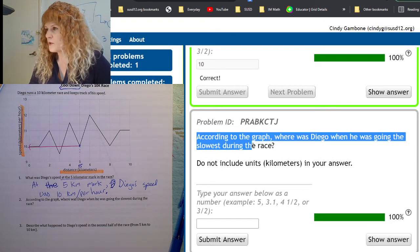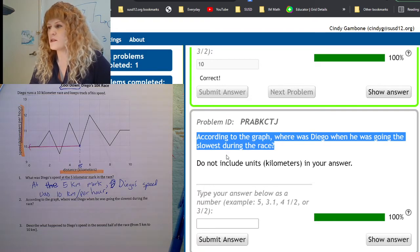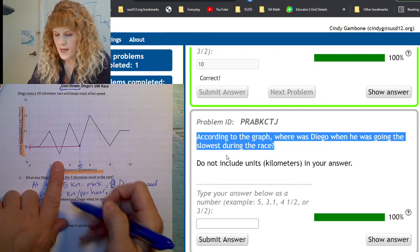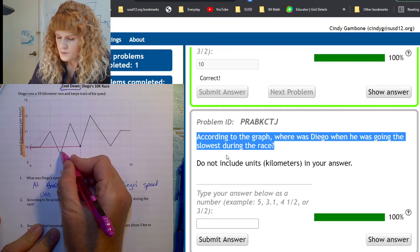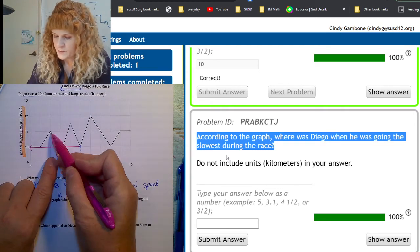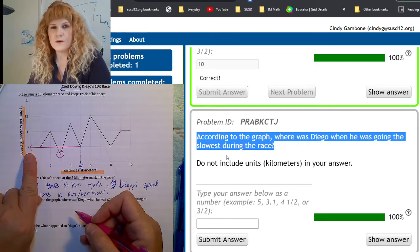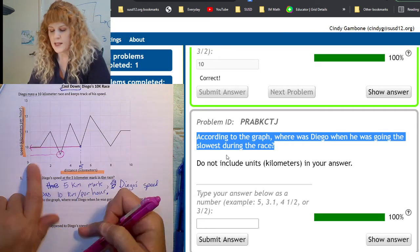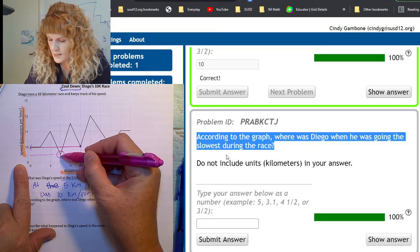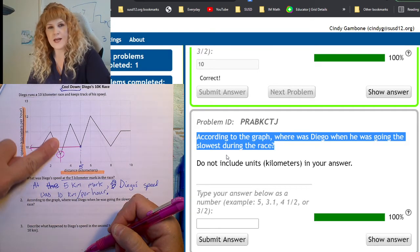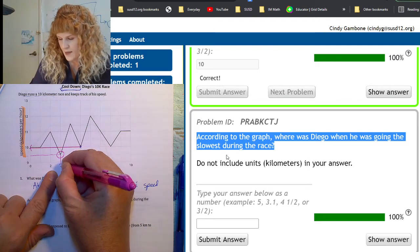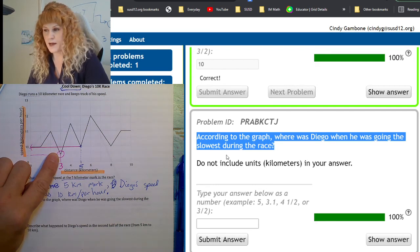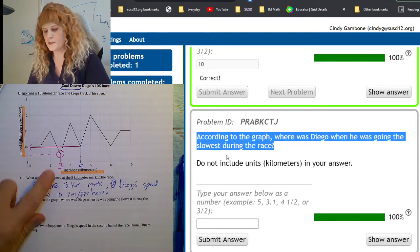Let's read it. According to the graph, where was Diego when he was going the slowest during the race? Look on the graph, and you can see that his slowest speed is right here. I'll circle it. That's when his speed dipped down low, below 10 kilometers per hour, and I don't know what that speed was because it does not line up with a number on the y-axis, but it does line up with a grid line on the x-axis. I can see that was at three kilometers. Maybe he was going uphill, and that's why he lost speed. But at three kilometers, his speed was the slowest.